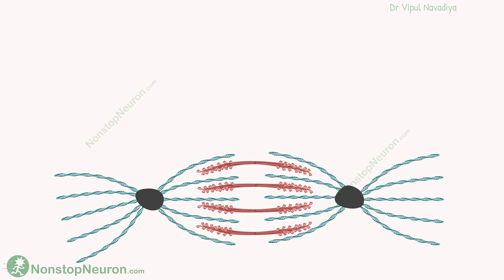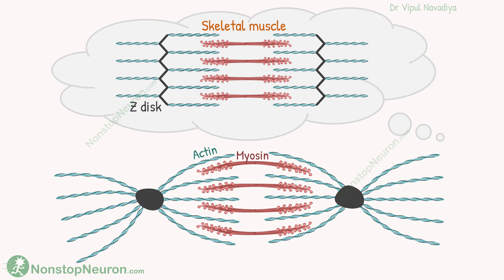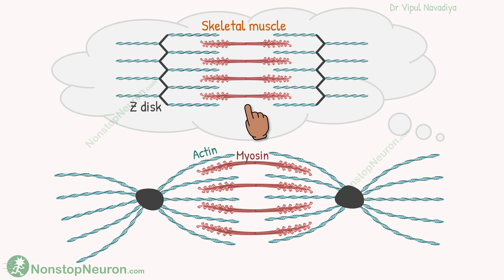The contractile elements inside the fiber are our familiar friends actin and myosin — you must remember them from skeletal muscles. However, in smooth muscle, they are arranged differently. In skeletal muscle, the actin filaments of neighboring sarcomeres are attached at Z-discs, and in between the actins of two Z-discs, we have myosin.